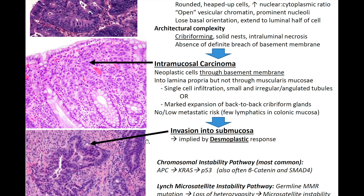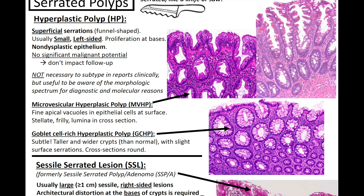For Lynch syndrome, you have the microsatellite instability pathway — germline MMR mutations leading to loss of heterozygosity and microsatellite instability. Next up, we've got serrated polyps.